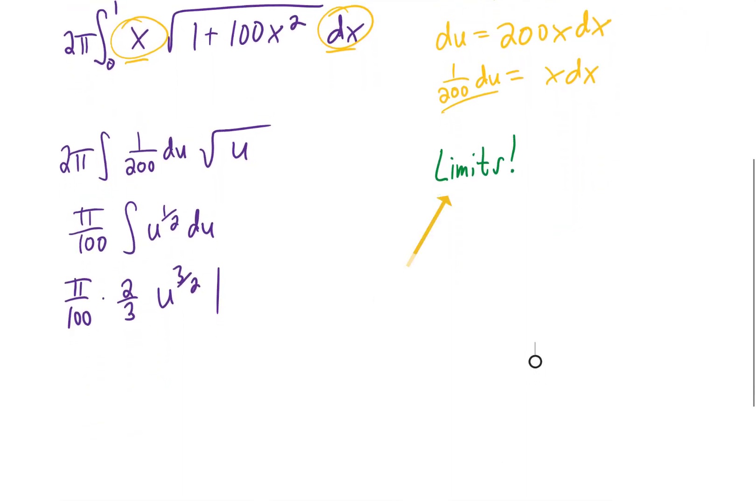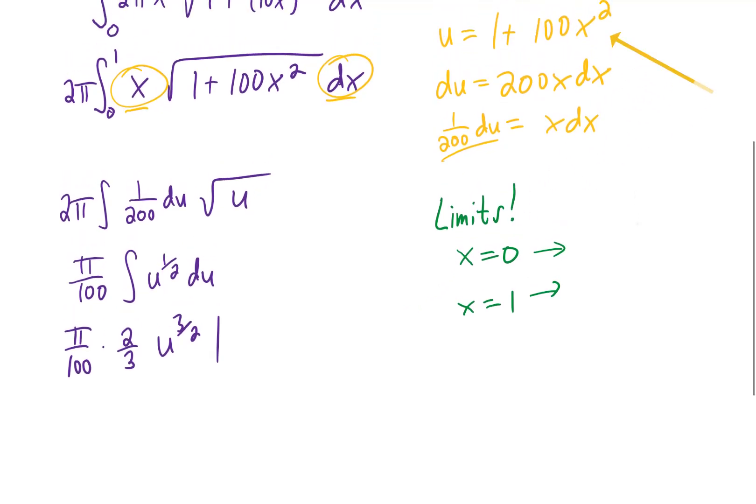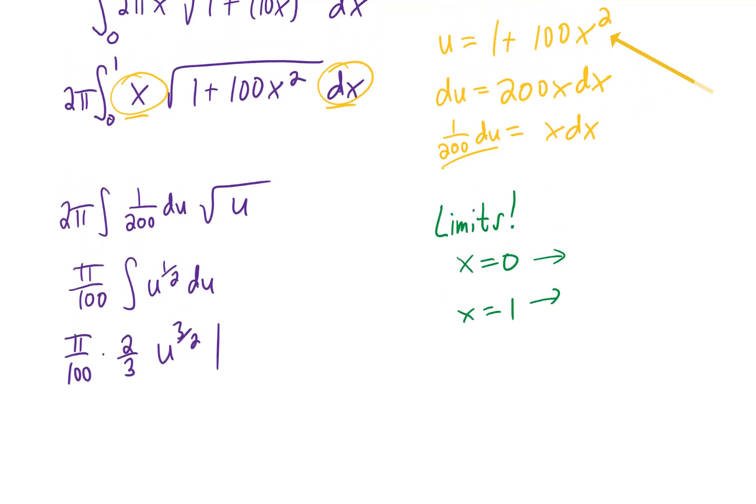We forgot about our limits. If we go back, we'll notice that our limits on x went from x equals 0 to x equals 1. And if we look at the substitution formula that we used right here, plugging in x equals 0 will give u equals 1, and plugging in x equals 1 will give u equals 101. So our limits of integration on this integral are going to go from 1 to 101.